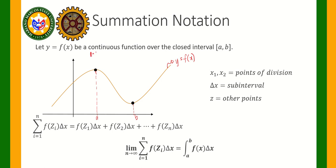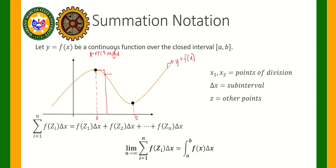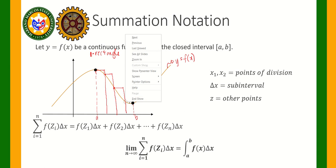So n is the number of rectangles. Drawing one rectangle here — that will be 1. Then the next one will be here. They have equal width. The third one here, and for the fourth one, there.